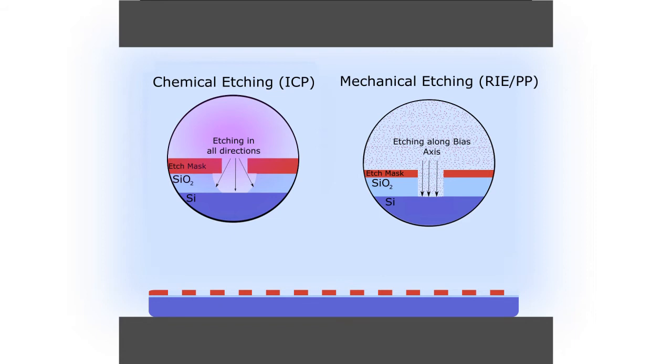Thus, by balancing the two mechanisms, anisotropic structures, like trenches and posts, can be etched into materials.